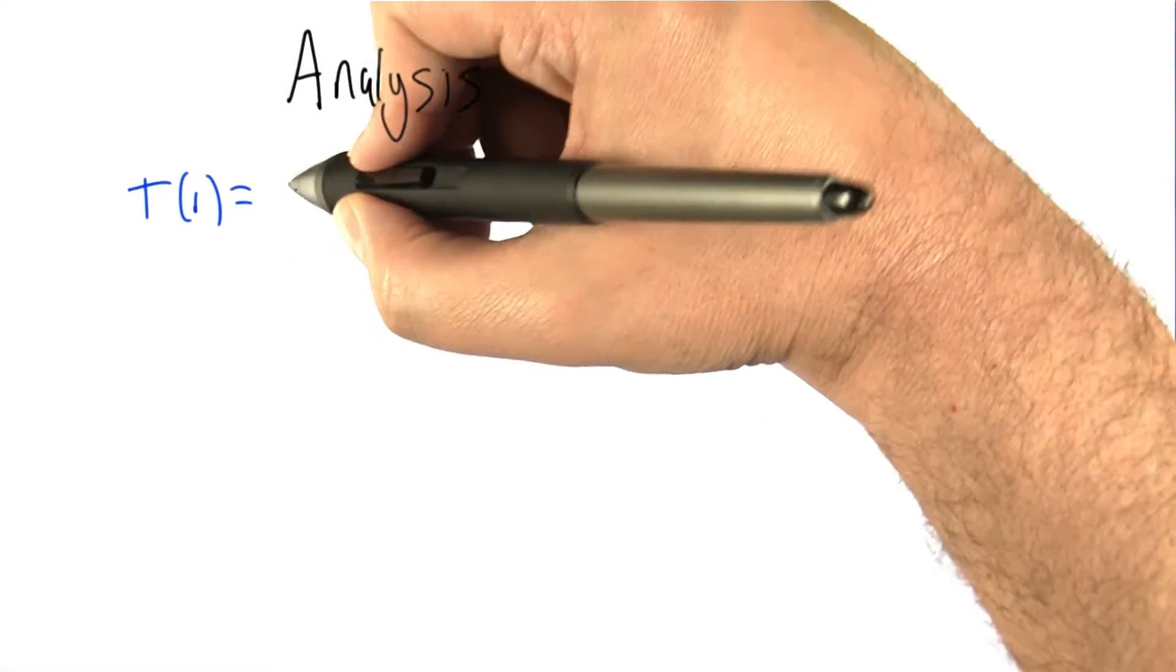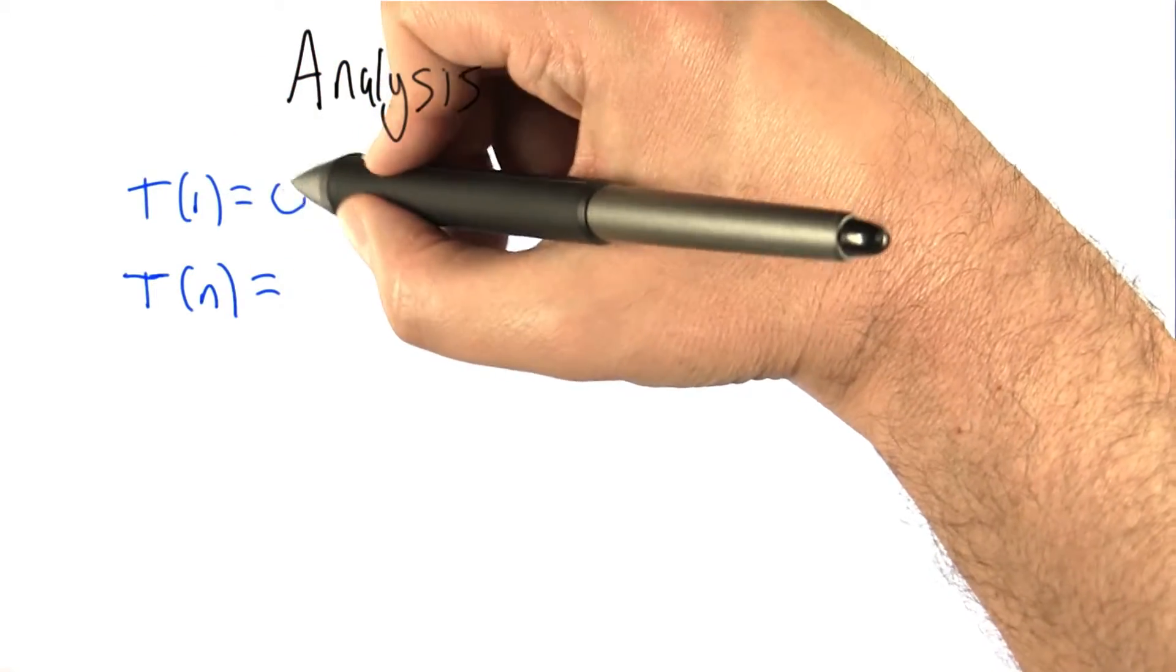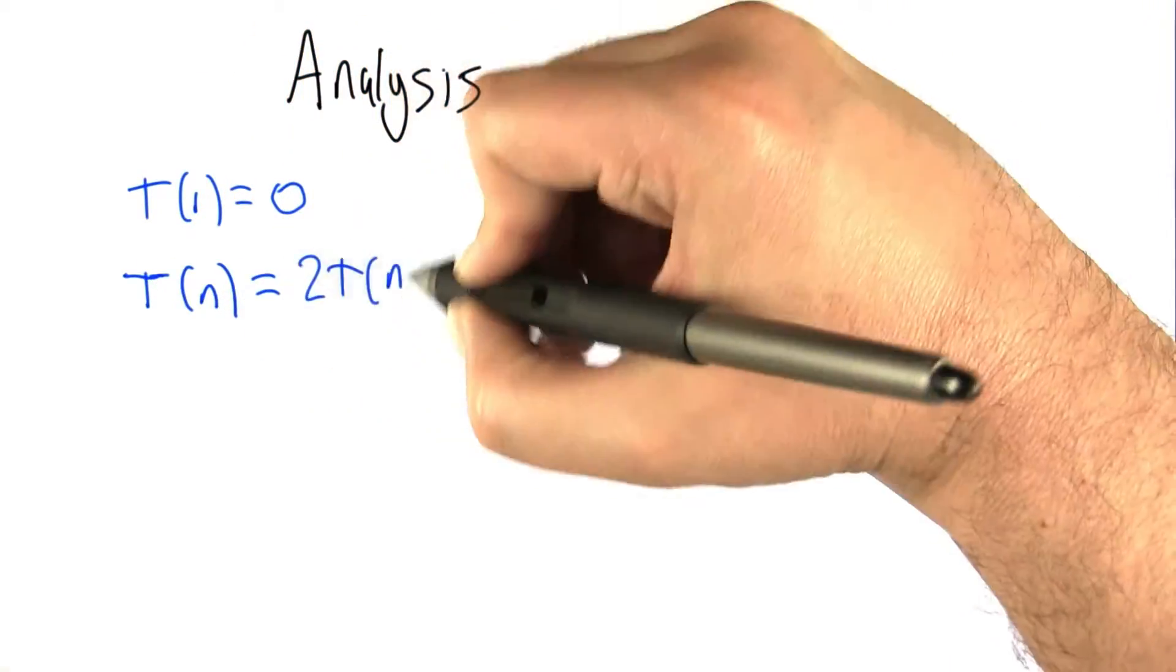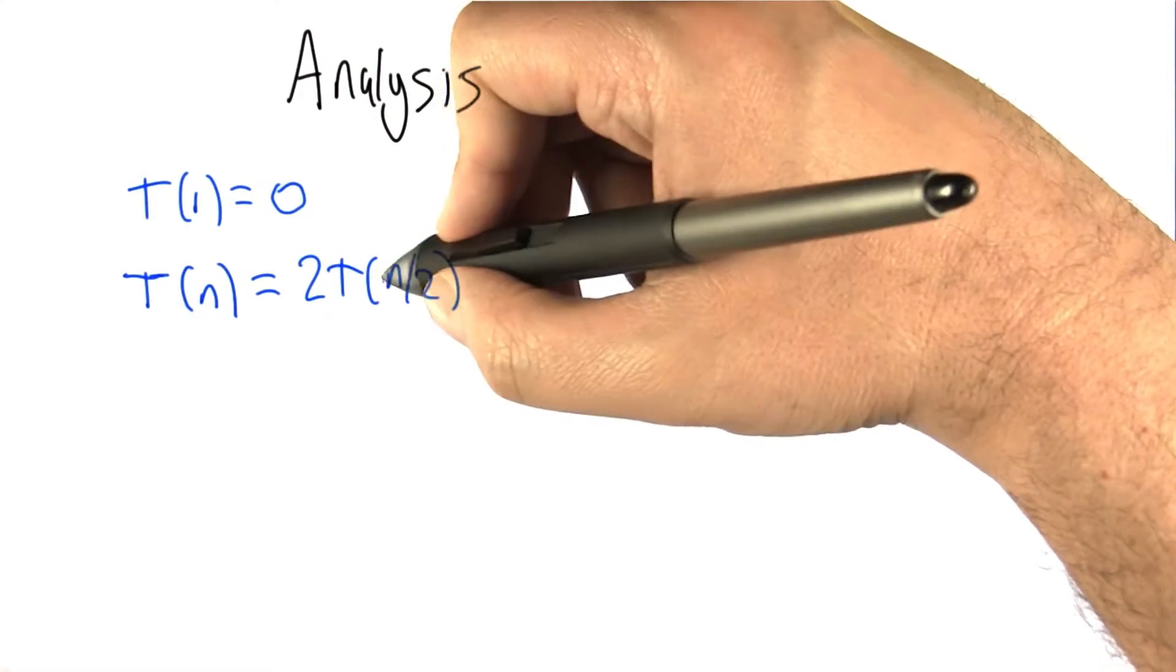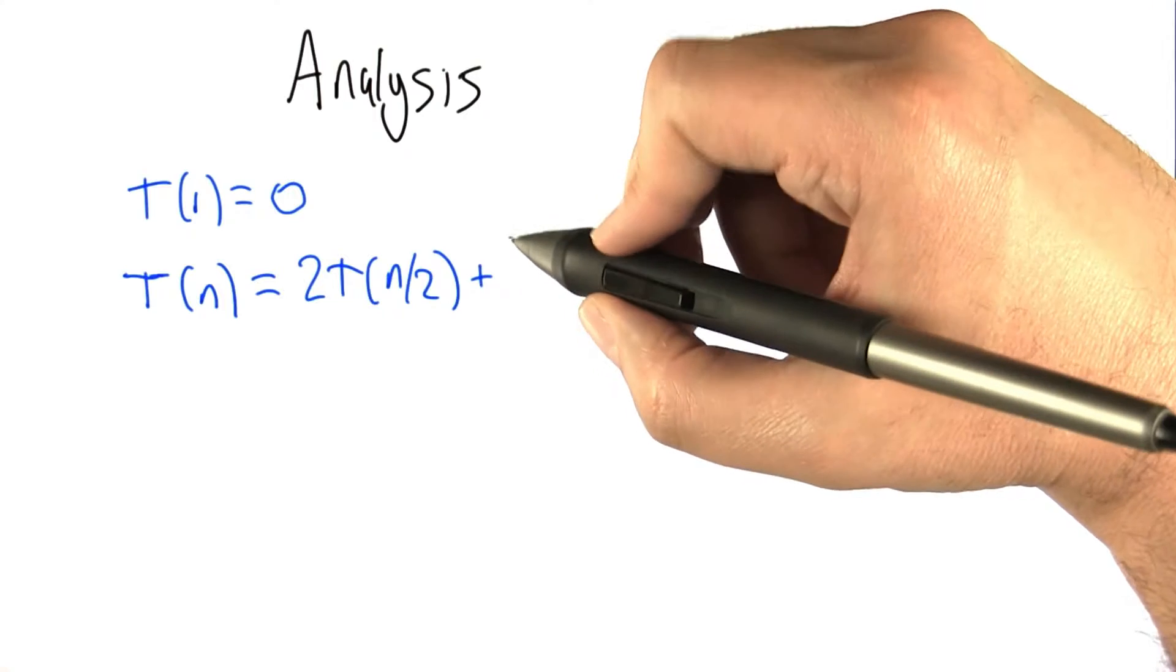So how many edges are in that graph? Well, we're going to do another recurrence relation. Once again, a graph with one node has 0 edges. A graph with n nodes has however many edges are in two subgraphs each of size n over 2. Then we're going to add to that what?